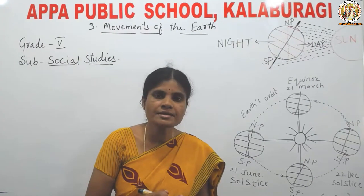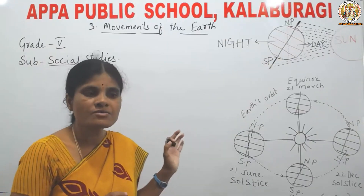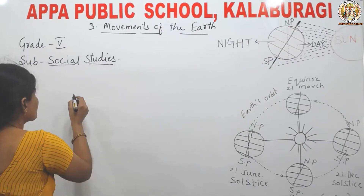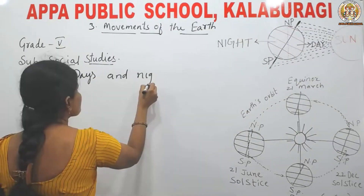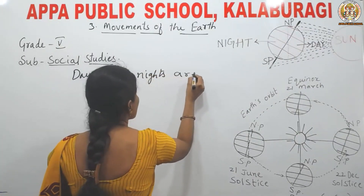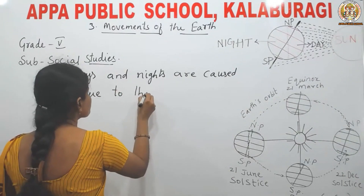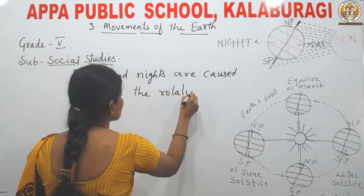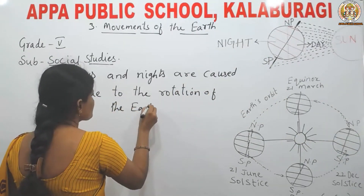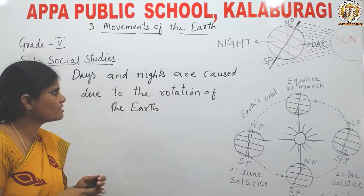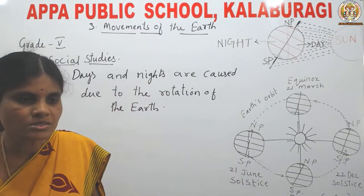Today we have days and nights. How are days and nights caused? Days and nights are caused due to the rotation of the earth. Let us see now how days and nights are caused.